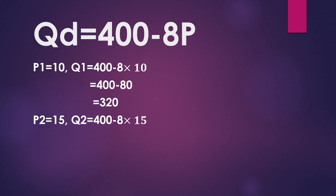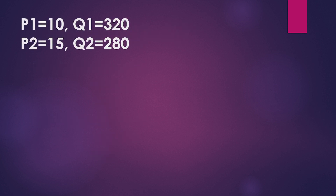Second price P2 equal to 15, so Q2 equal to 400 minus 8 multiplied by 15 equal to 400 minus 120, equal to 280. When price is 15, quantity demanded is 280. So first price P1 equal to 10, quantity demanded 320, and when price P2 equal to 15, quantity demanded Q2 equal to 280.